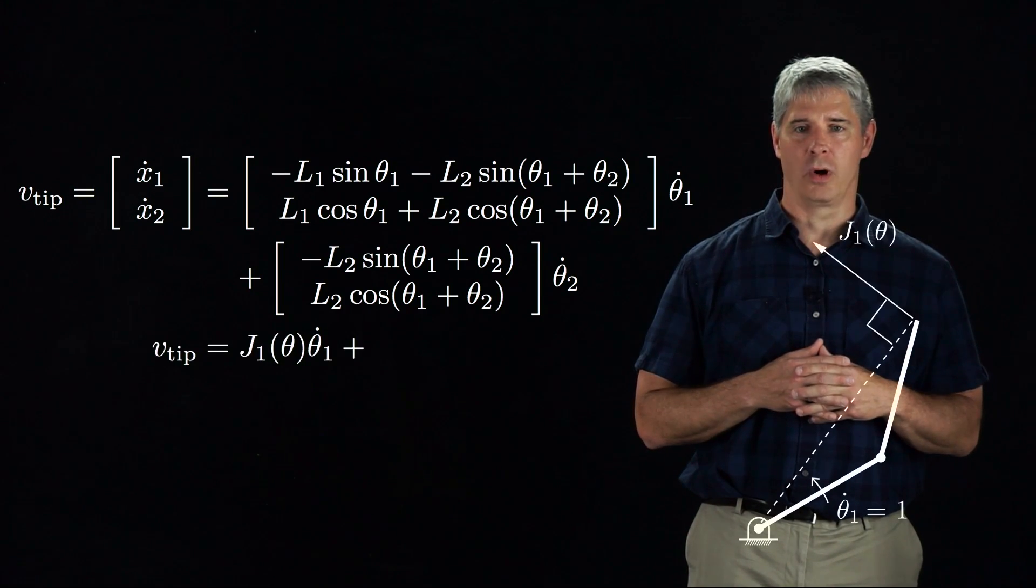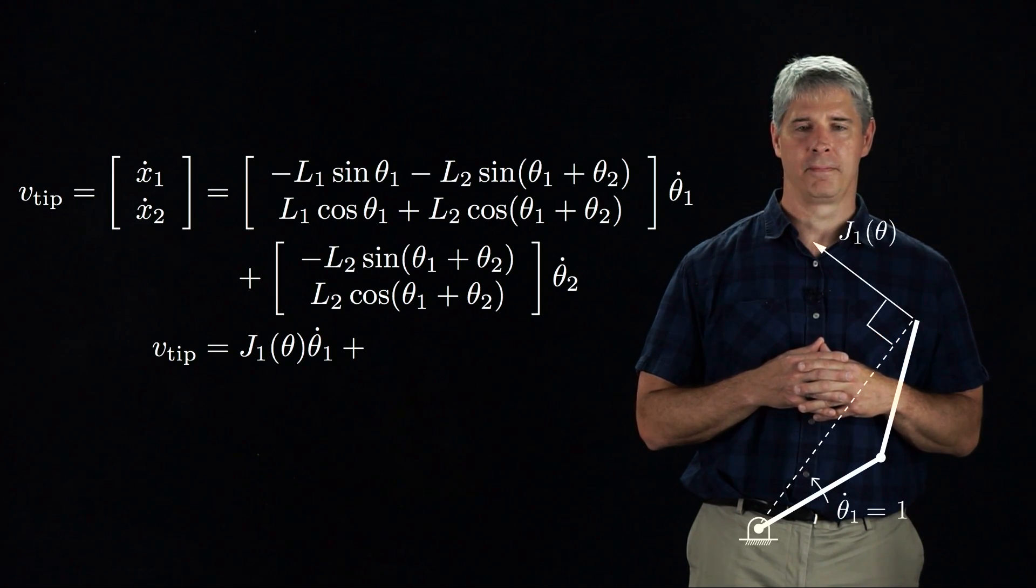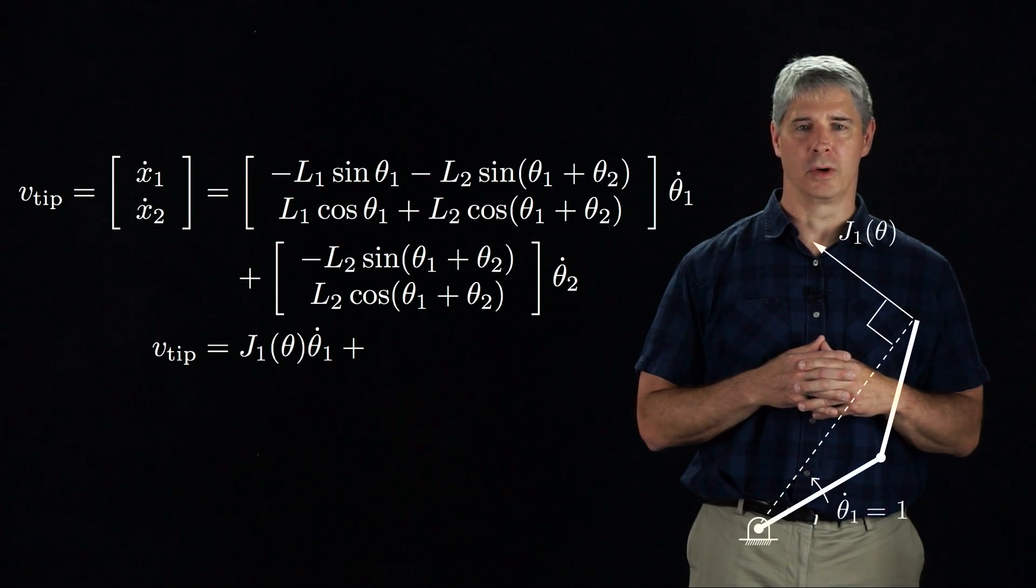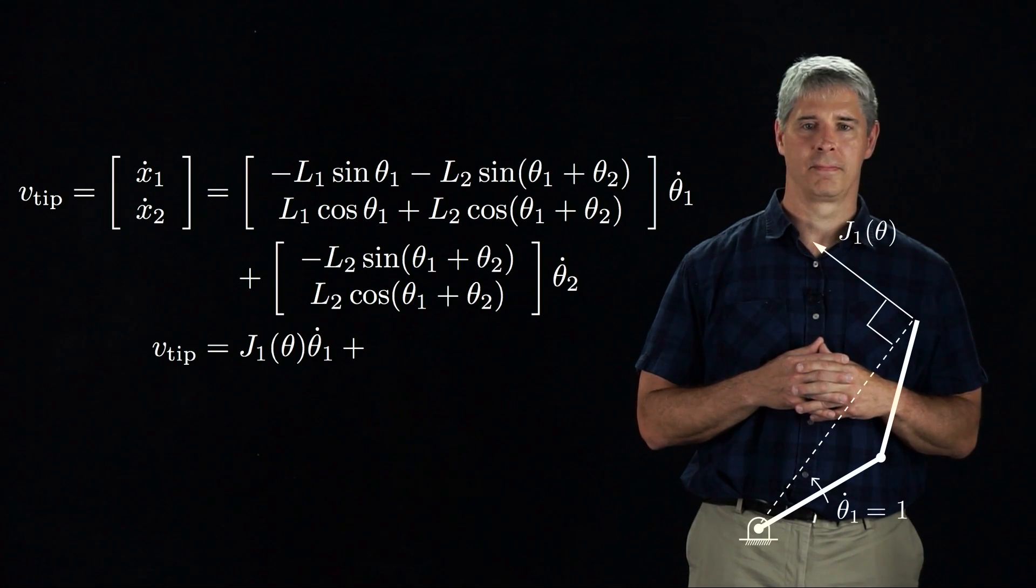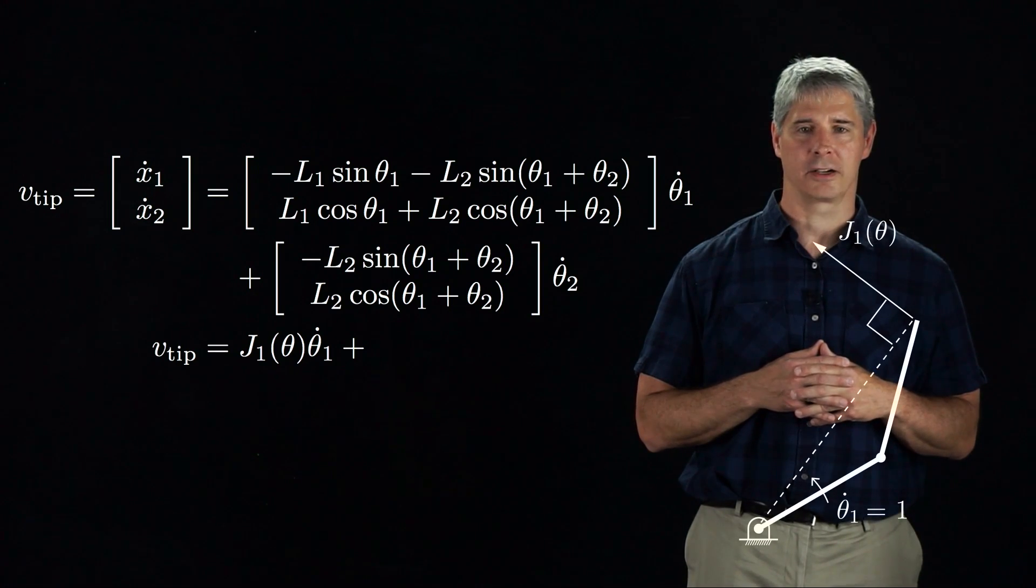Let's call the first vector J1. Clearly, it's a function of the joint variables theta. J1 is just the end effector velocity when joint 1 rotates at unit speed while joint 2 is kept constant. We can visualize it as a vector orthogonal to the line connecting joint 1 to the end effector.